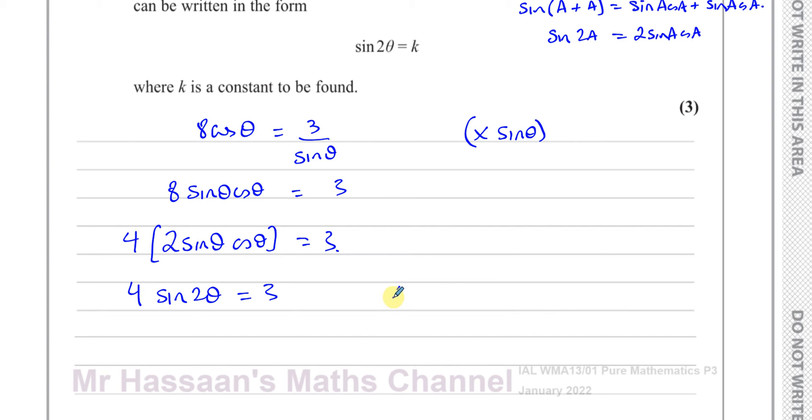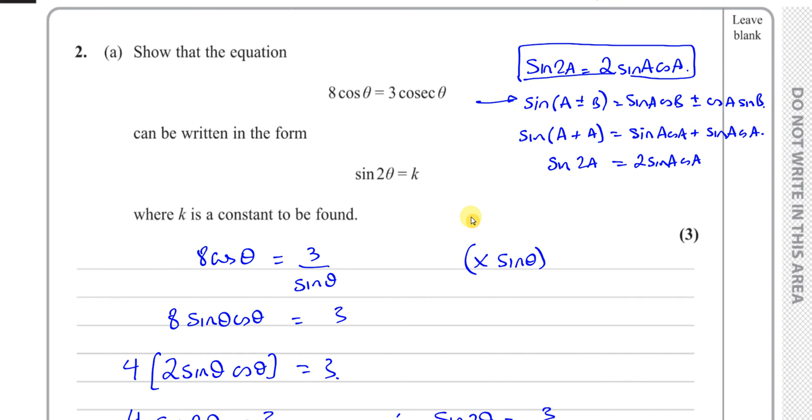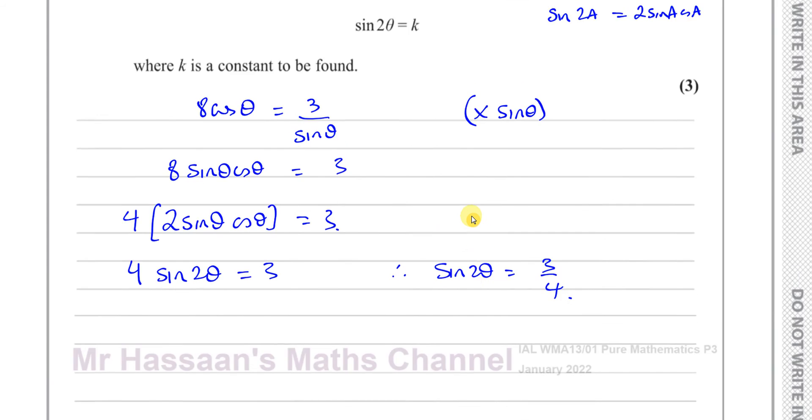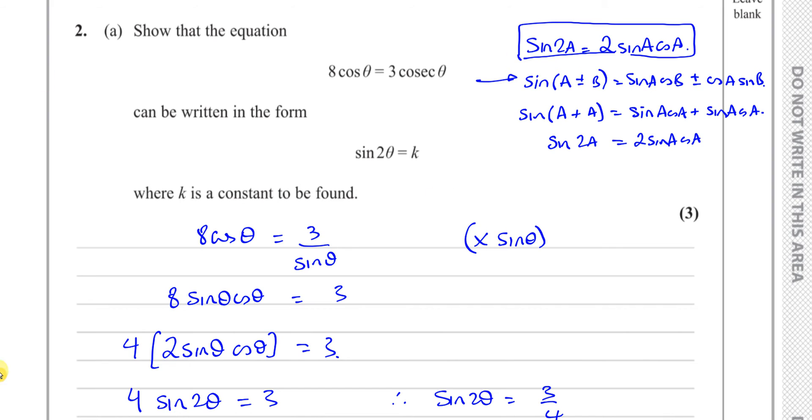I can then divide both sides by 4, so I can then say that therefore we can say sine of 2θ is equal to 3 over 4, where k is a constant to be found. So the k is 3 quarters. Okay, so there's the answer to part A. Now we need to answer part B which is on the next page.